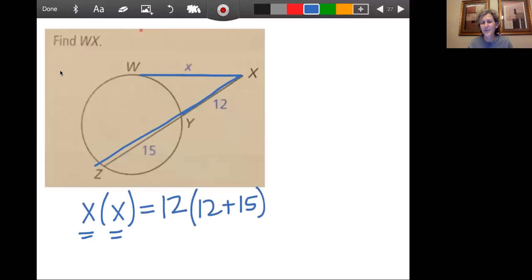And of course, you can do that in your head. I just wanted to show you written out. And so what we get here is x squared equals 12 times 27, or x squared equals 12 times 27 is 324.